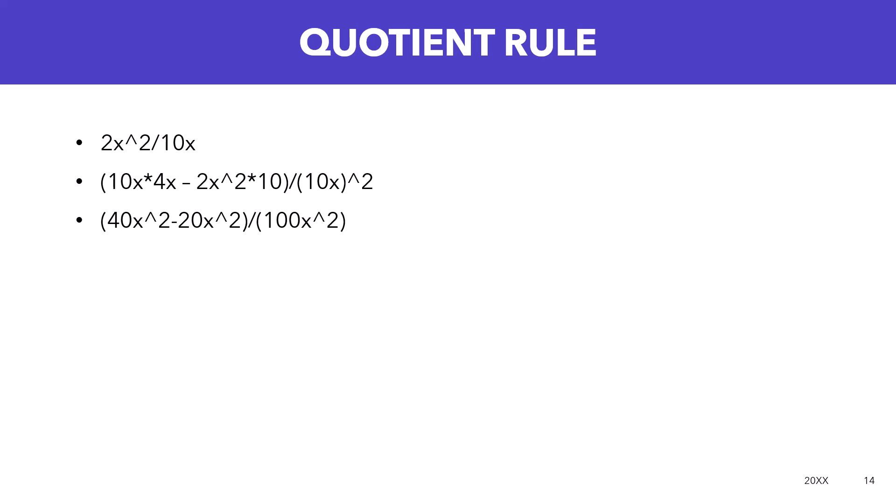In this case, you could get 20x squared over 100x squared and further reduce that if you would like, but that's how the principle applies with the quotient rule.